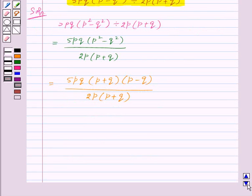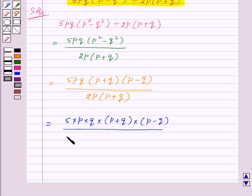Now this can be written as 5p into q into p plus q into p minus q upon 2p into p plus q. Now we will cancel out the common factors from the numerator and denominator.